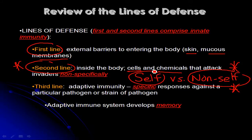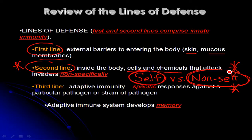Anything that is naturally part of your body falls under the category of self. There are things other than pathogens that you're exposed to on a daily basis — pollen, for example. That's not a pathogen, it's not a microbe, but it is non-self. It has molecules on its surface that are not naturally present in your body, so your immune system is programmed to attack those. In some people that response goes overboard and you develop an allergy.